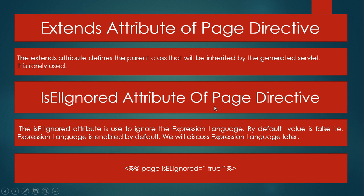The isELIgnored attribute is another attribute of the page directive. The isELIgnored attribute is used to ignore the expression language, which we will discuss in a later video session. By default the value is false, meaning expression language is enabled by default. This is the syntax, and here isELIgnored is set to true.